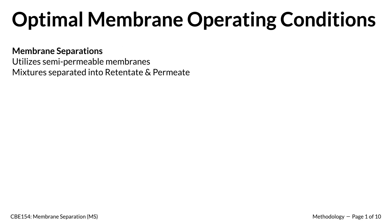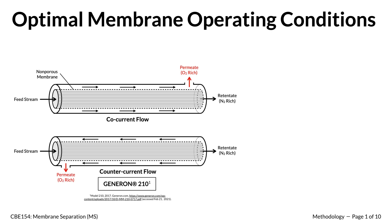Separation processes are widely used by chemical engineers on the industrial scale to isolate desired products from a mixed stream. In particular, semi-permeable membranes are effective when separating two miscible products with different diffusion rates. Applications of large-scale membrane separation include uranium isotope separation and water desalination. Our focus in this experiment was gas separation of nitrogen-oxygen gas using a tubular cartridge with a non-porous membrane.